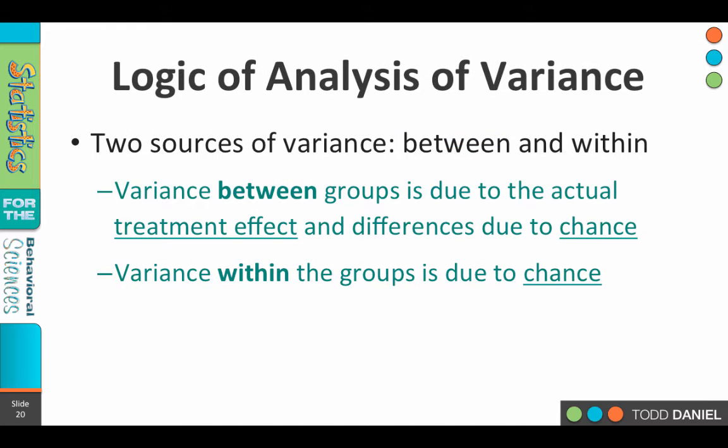The logic behind analysis of variance is that we have variability going in two different directions: between and within — between groups and within groups. Between groups means comparing one type of diet to another, and the differences between the groups is due to the treatment effect. However, as we've already learned, anytime there's variability there's always going to be error — the effect of chance, just random variability we can't account for. So the differences between will be due to the actual treatment effect blended with a difference that is also due to error or chance.